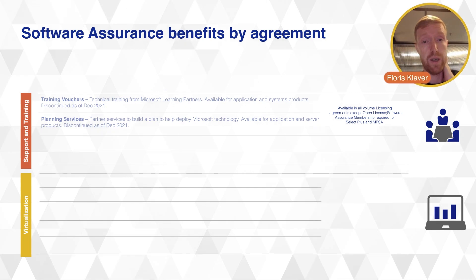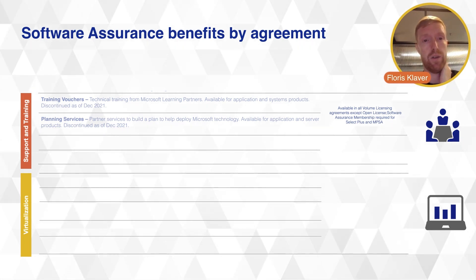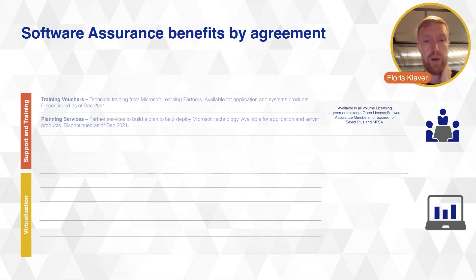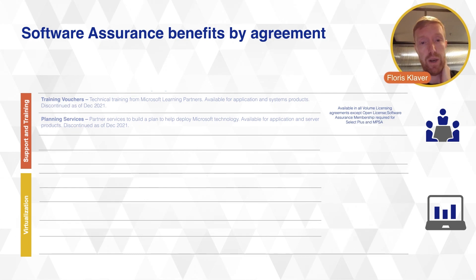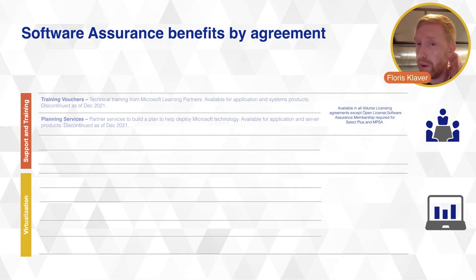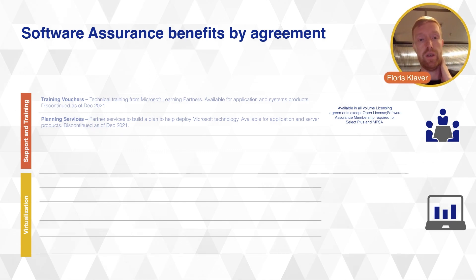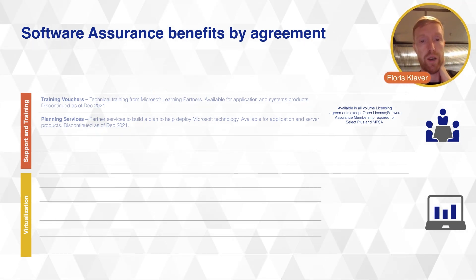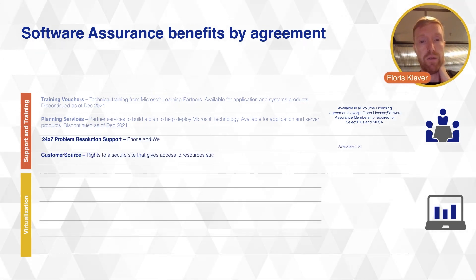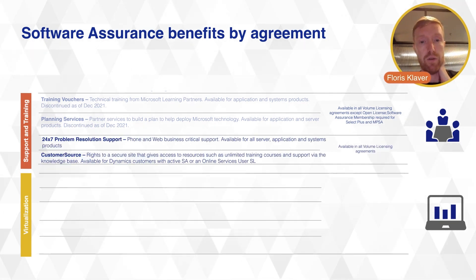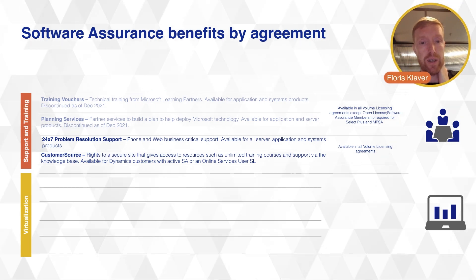Under support and training, training vouchers and planning services have been discontinued — these used to be very valuable to many organizations, especially those signed up for Microsoft Premier services. Unfortunately, quite a bit of value has been removed from Software Assurance in this area. 24/7 problem resolution support is now typically handled through your Unified Support contract.